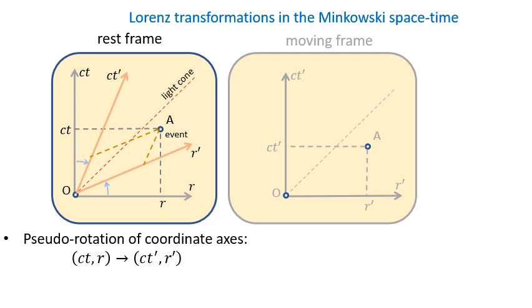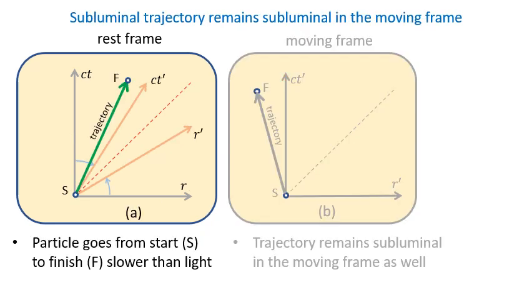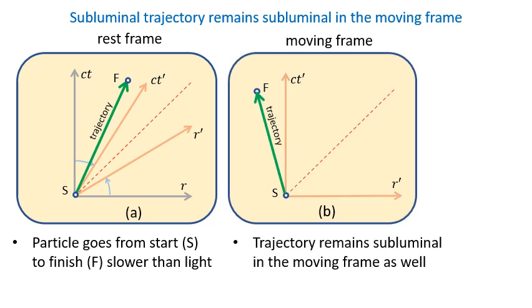From the point of view of the observer at rest, the axes CT' and R' are no longer orthogonal. But from the point of view of the moving observer himself, his axes are perpendicular to each other. This follows from the principle of relativity. Now, if a particle trajectory was subluminal in the rest frame, then in the moving frame its motion will remain subluminal as well. No surprises here.